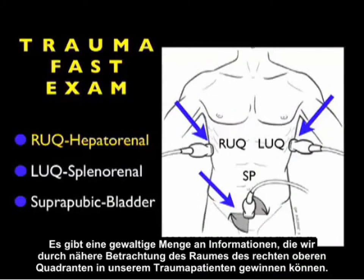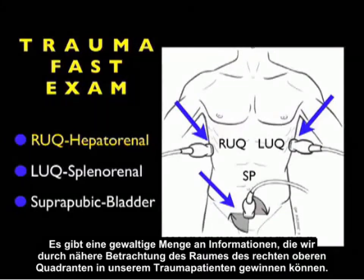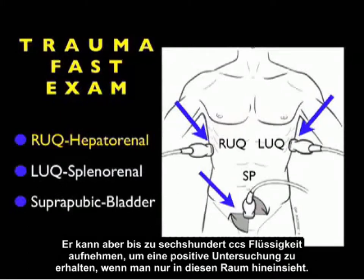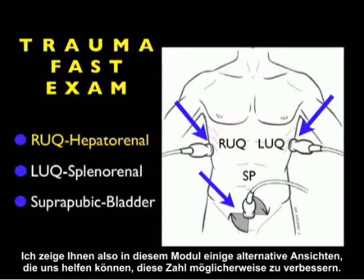There's a tremendous amount of information we can gain by looking closely into the right upper quadrant area in our trauma patient. Traditionally it's been emphasized that the hepatorenal area, or Morrison's pouch view, is the primary target for the right upper quadrant, but it can take up to 600 cc's of fluid to make a positive exam if only looking into that area. So I'll show some alternative views in this module that can help us to possibly improve on that number.